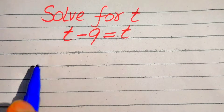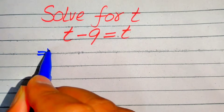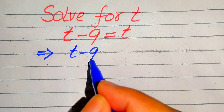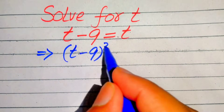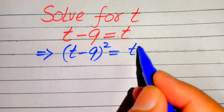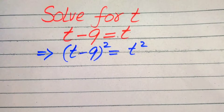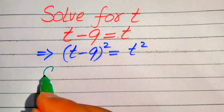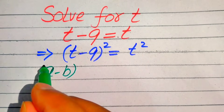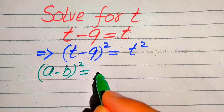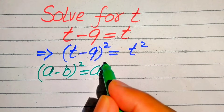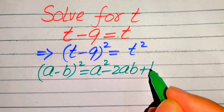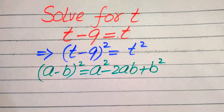In this method, first we need to take the squaring on both sides. When we square both sides it will be written as t minus 9 whole square is equals to t square. Here we use the algebraic formula: a minus b whole square is equals to a square minus 2ab plus b square.